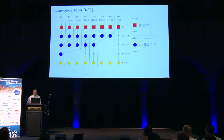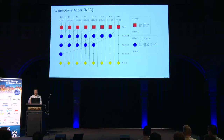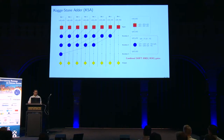This adder is a parallel prefix adder, which means it processes each bit in parallel, not like a ripple carry adder which processes each bit sequentially. This is quite optimal for software, because each software instruction will process n bits in parallel. What I want to highlight is these blue gates, which are a combined shift, AND, and XOR, used to speed up the operation.